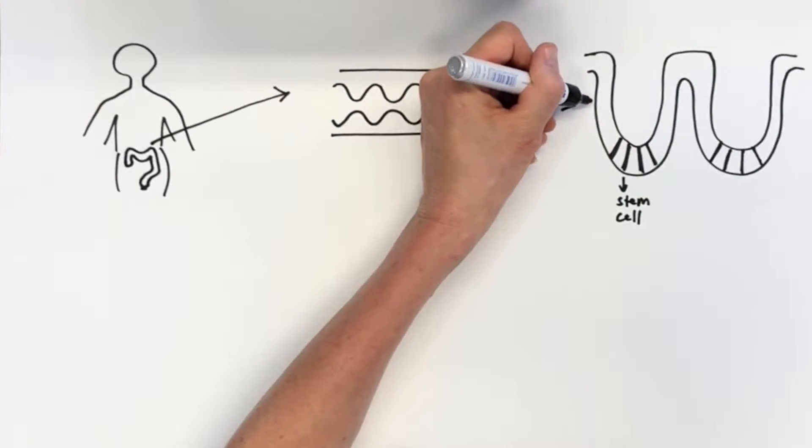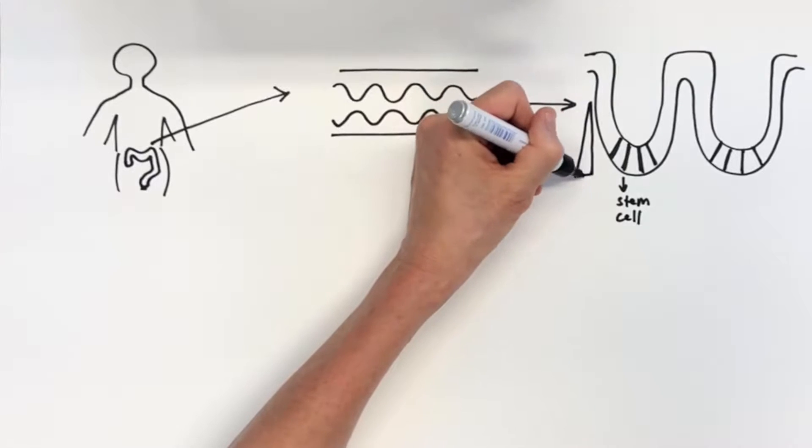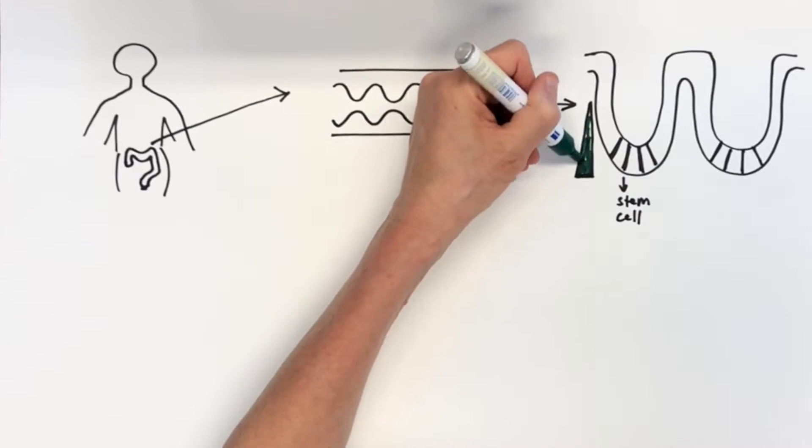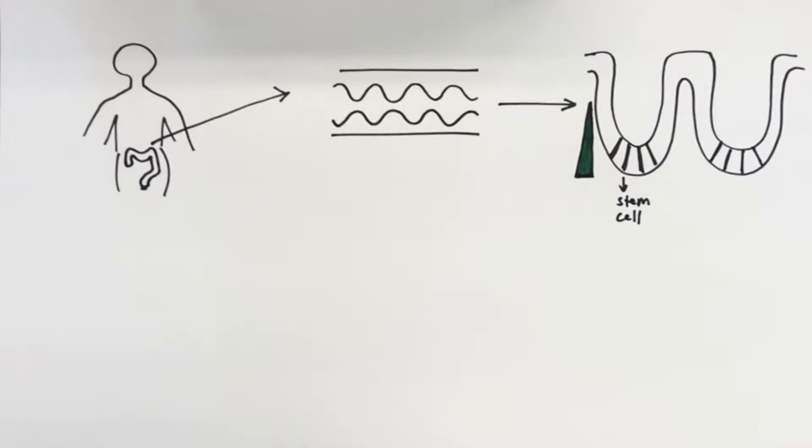In these crypts, stem cells are located that highly depend on Wnt proteins produced by surrounding niche cells. Their rates of cell division is controlled by a gradient of Wnt signaling.